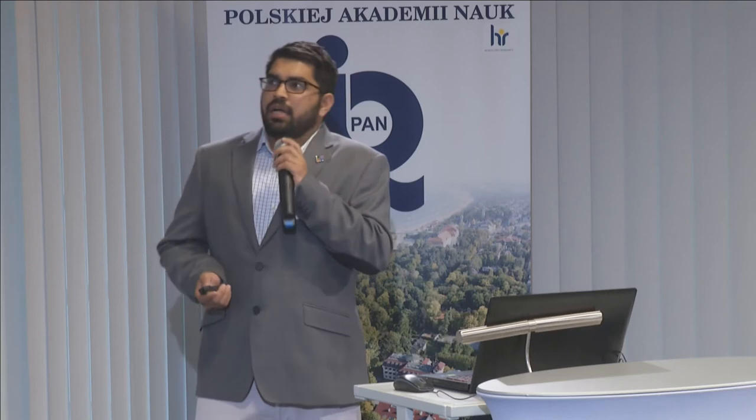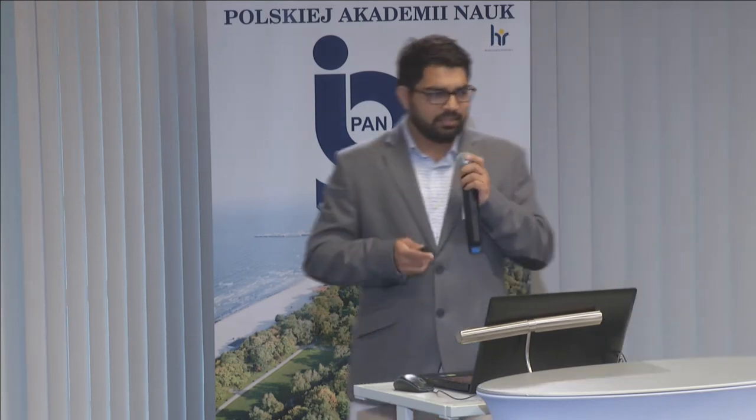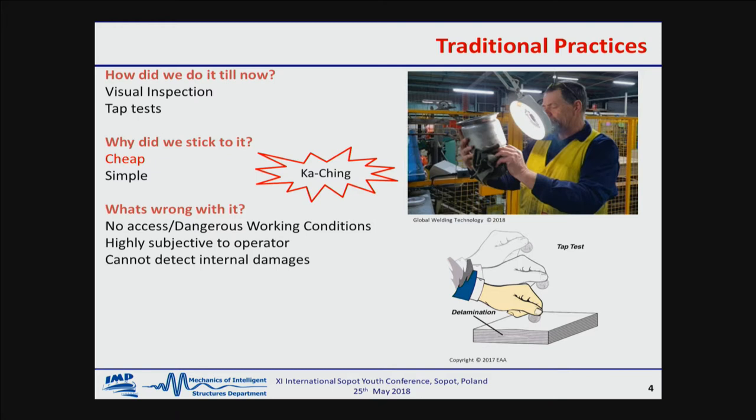Traditional practices are visual inspection and tap test. Visual inspection is observing the material to see if there is any crack. The tap test is actually used quite often — to check the integrity of a glass, we strike them together, and if we hear a crack there is a crack. They are not very accurate, but we use them because they are cheap and simple. There are no rules or regulations defining what constitutes a problem. It is dangerous for the person doing the inspection — imagine being in windy conditions on a wind turbine — and it is highly subjective to the operator.